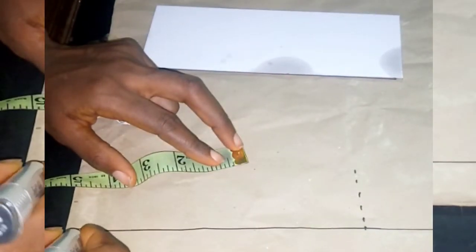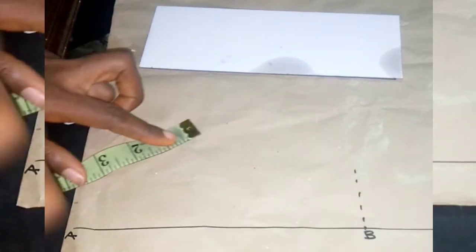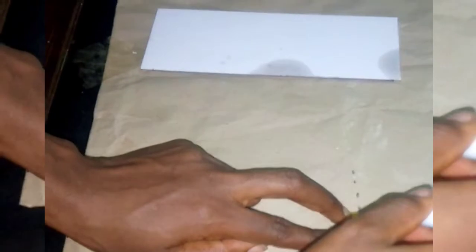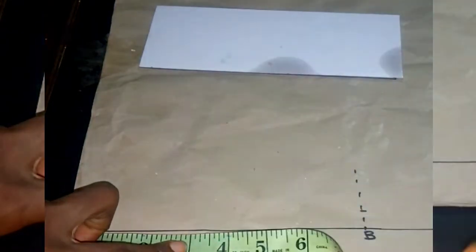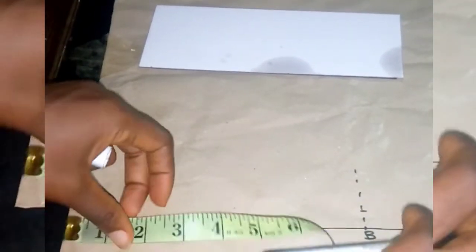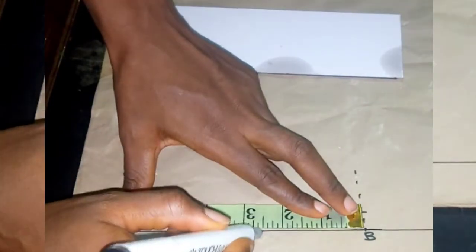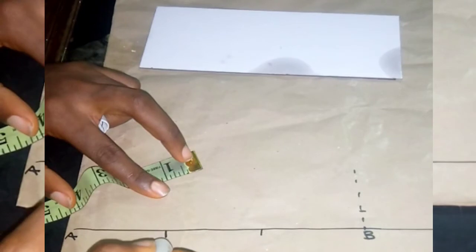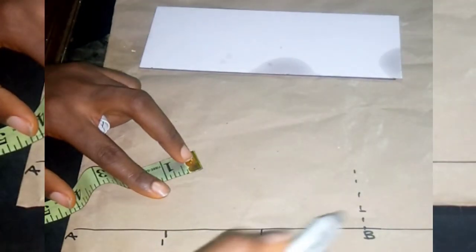So from point B upwards you measure 0.5 inch. After measuring 0.5 inch, you divide A to B into three equal parts, so you have 2.5 inches in three places. Then you name that one, you name that two. So you connect point 2 to point C.